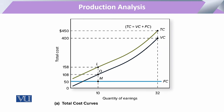Coming to these cost curves, we can see that the fixed cost curve will have no change throughout — so it will be a straight line. The variable cost curve is incremental but with certain change. By adding the variable cost and fixed cost, we get the total cost. Therefore, the shape of the total cost curve will be almost similar to the variable cost curve, following the same slope. The difference between the total cost curve and the variable cost curve is equal to the fixed cost.